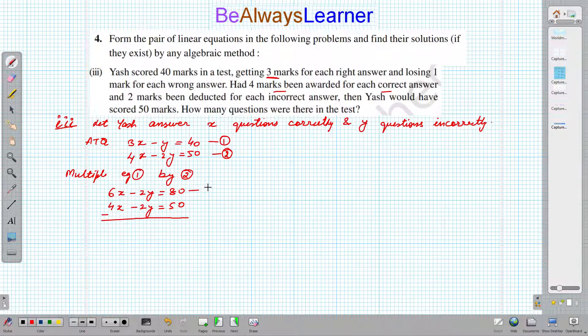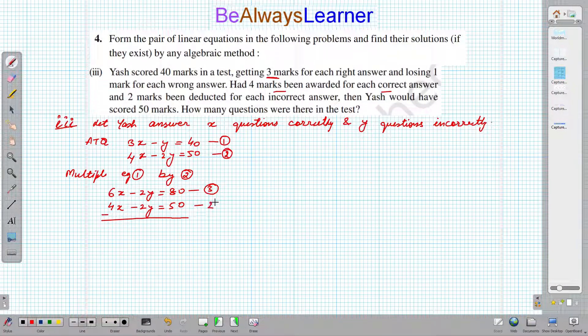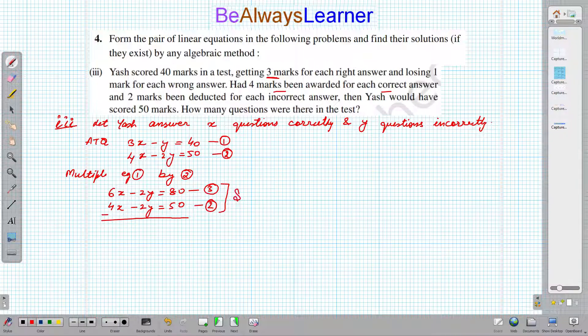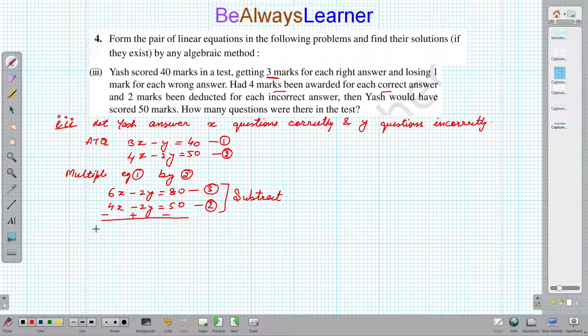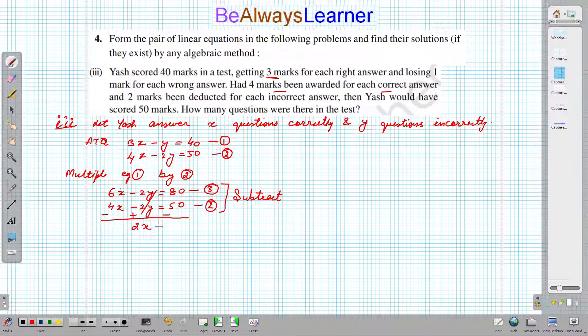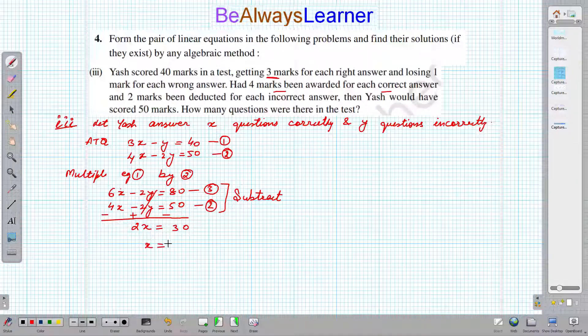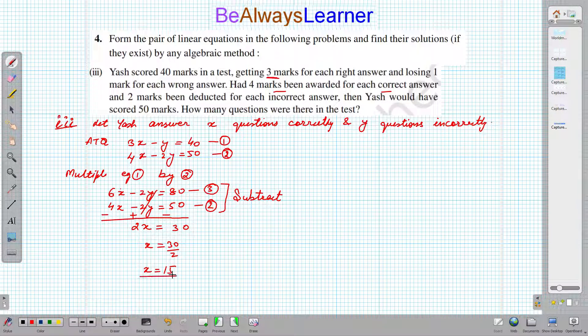This will be subtracting. This is plus and this is minus, so this is cancel out. 6x minus 4x that is 2x equals 30.